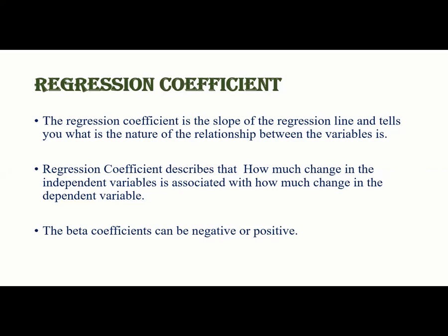For example, if the beta coefficient is 0.90 and statistically significant, then for each one unit increase in the predictor variable, the outcome variable will be increased by 0.90 units. And if the beta coefficient is minus 0.90 and statistically significant, then for each one unit increase in the predictor variable, the outcome variable will be decreased by 0.90 units.